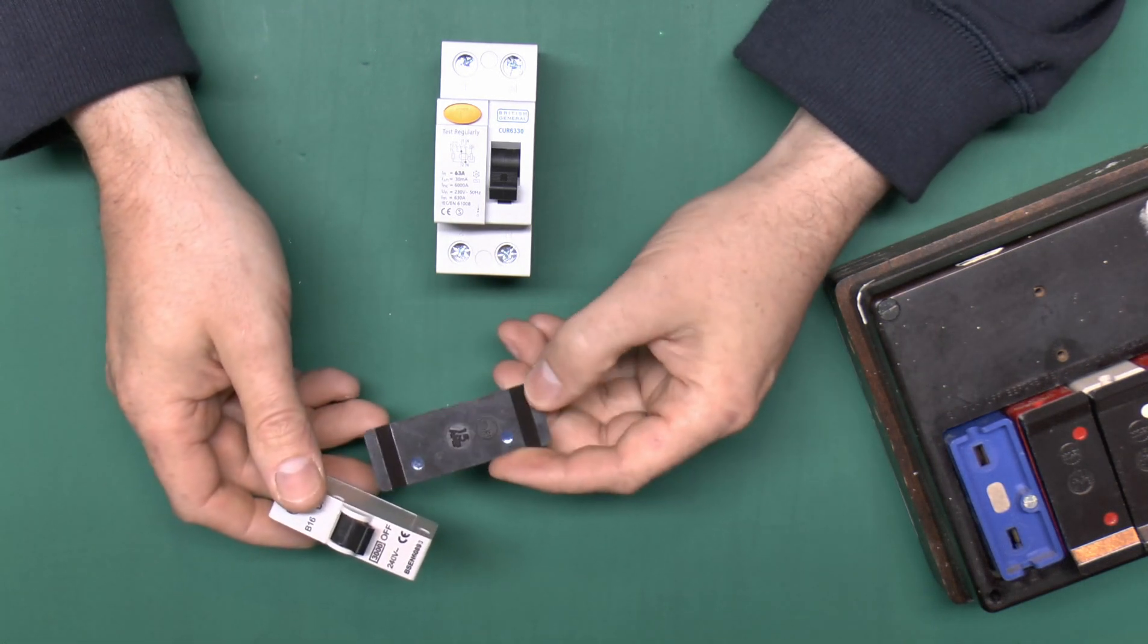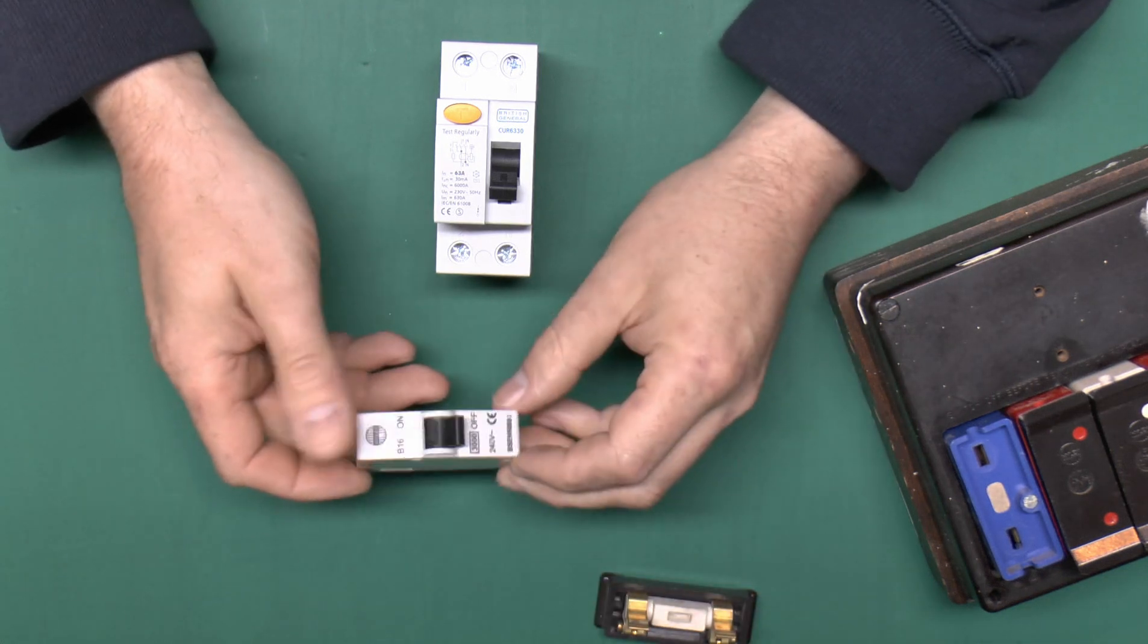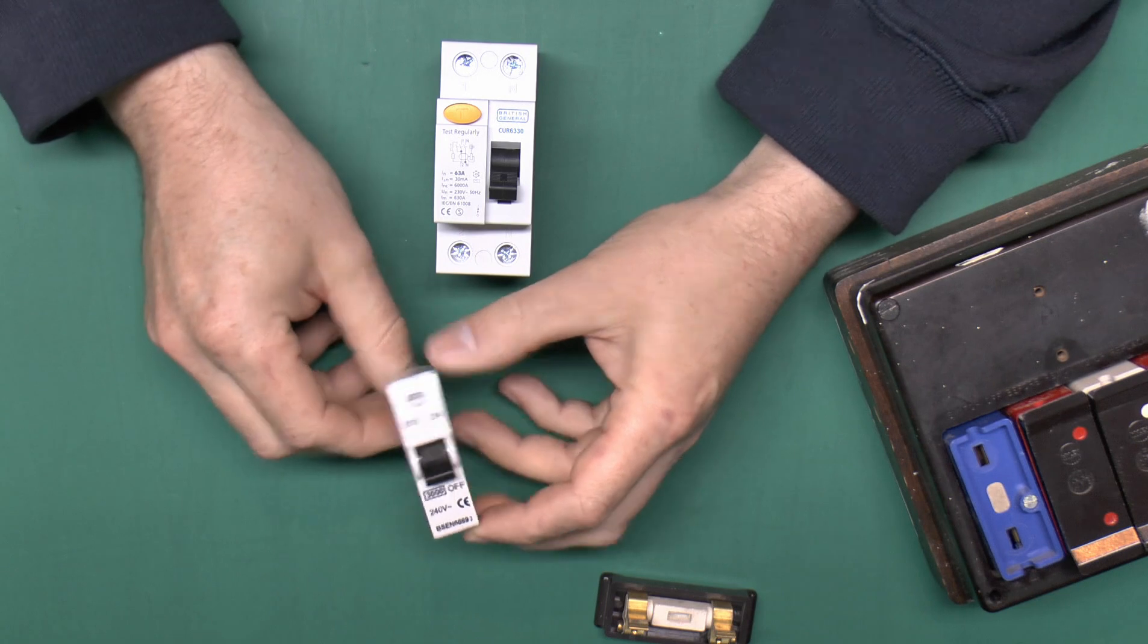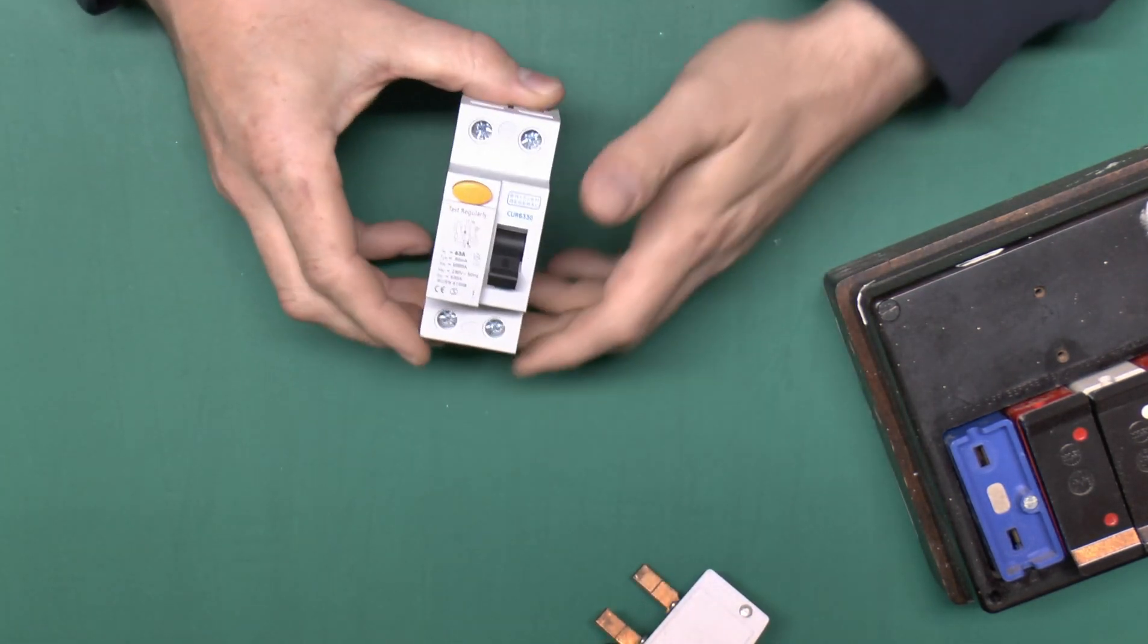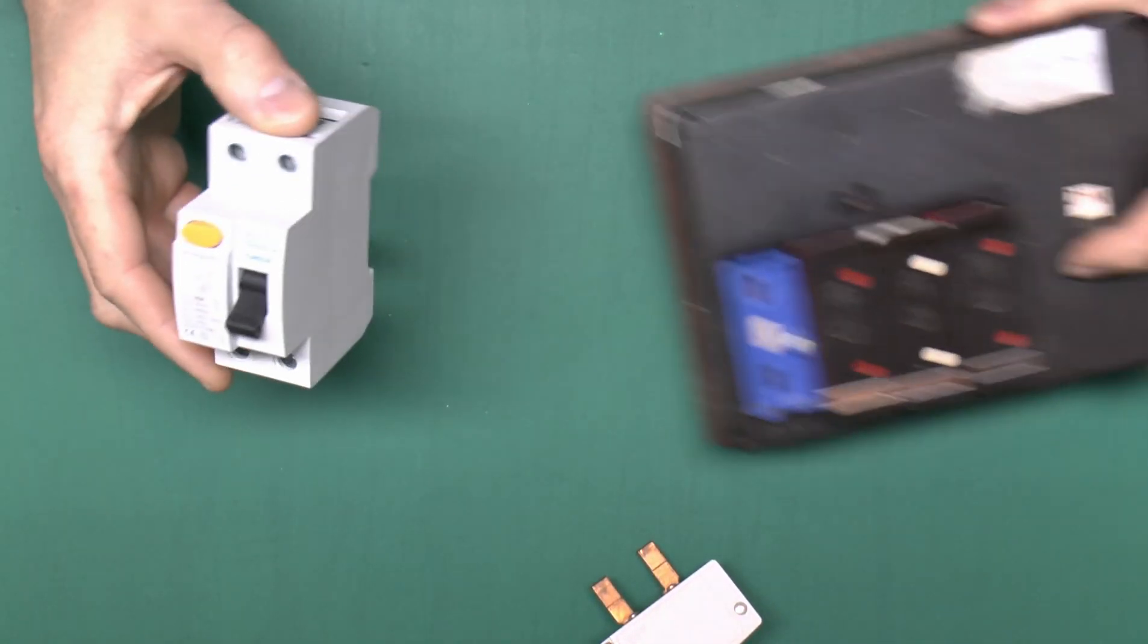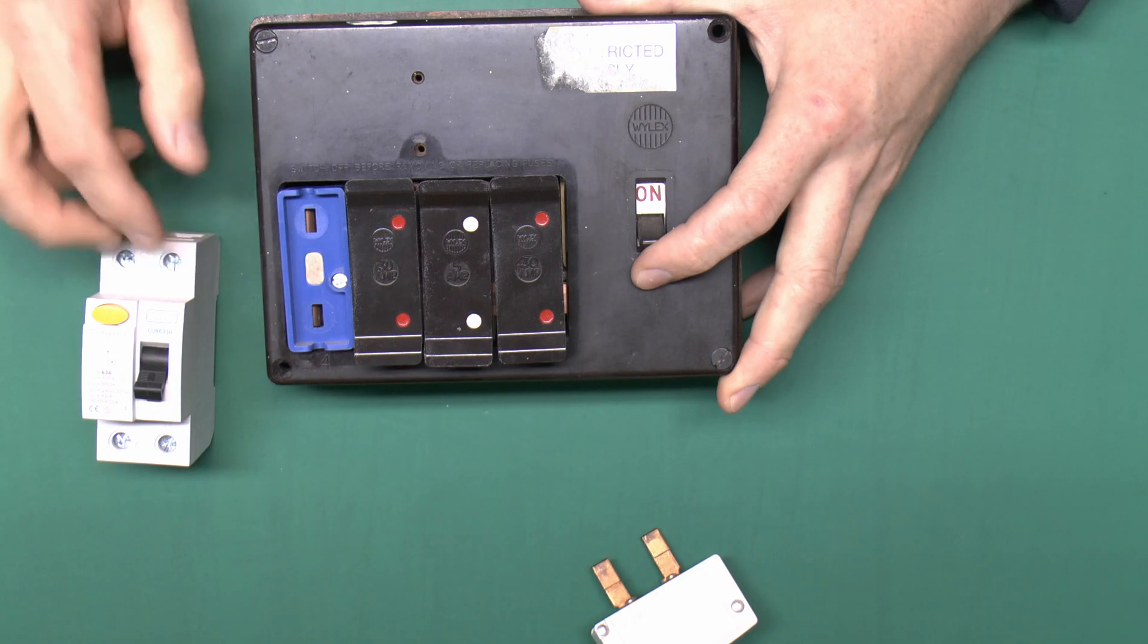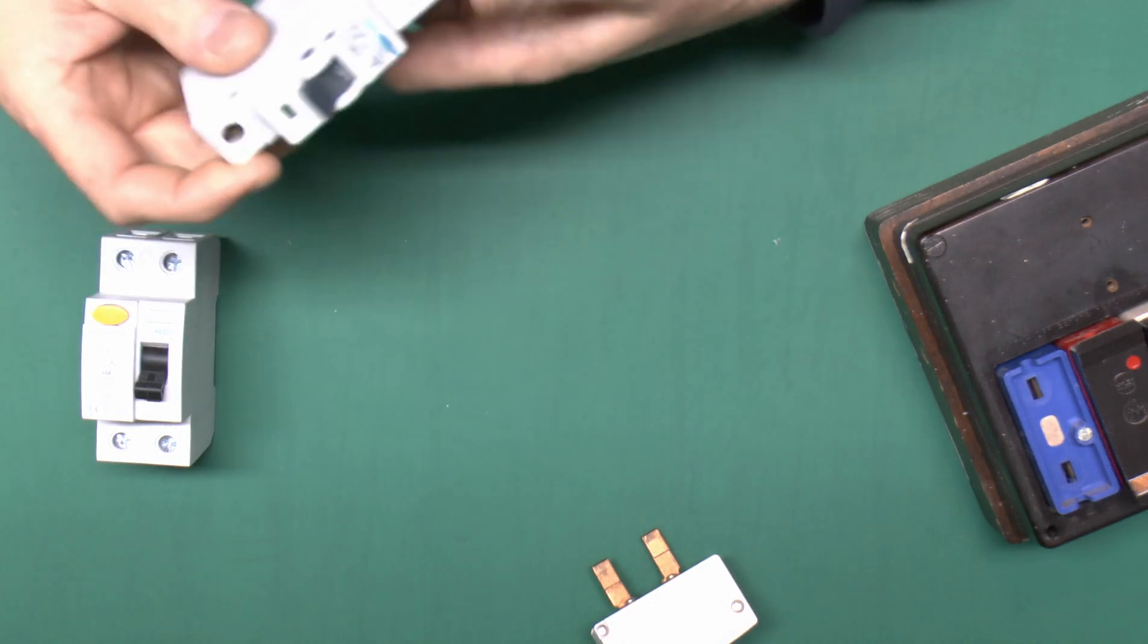This 15 amp fuse will allow well over 15 amps to flow for a very substantial amount of time. This thing here which is a 16 amp does the same thing. You could load this up to 16 amps and leave it there. It would just run all day long. So there's no way of fitting the equivalent of these into this box. These require a two pole connection. This is just a single pole.